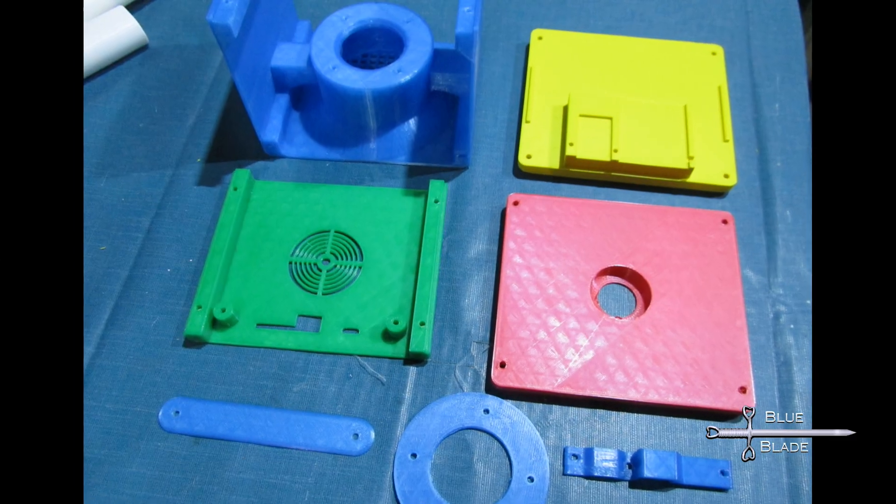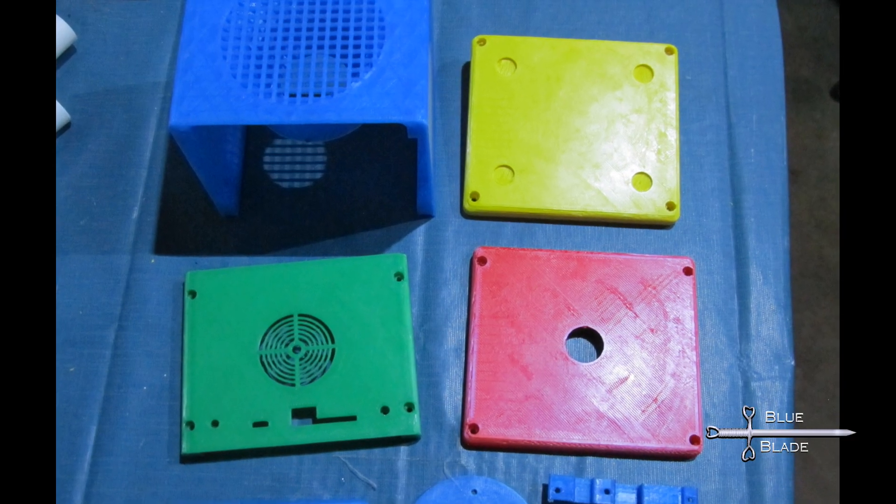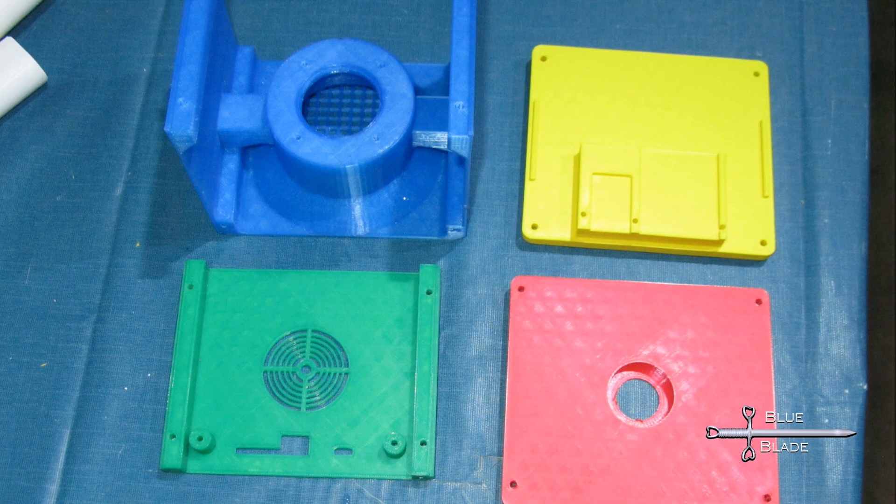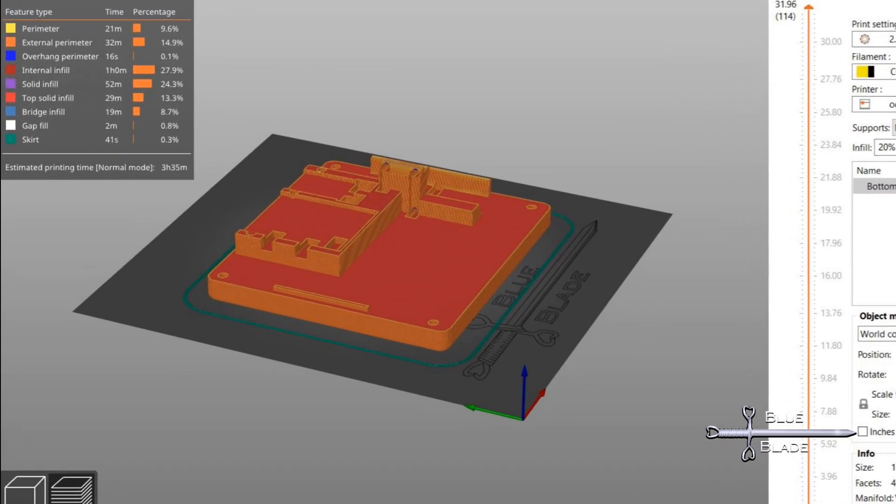For printing, I used PLA. Three walls, three top, and three bottom layers. 30% infill and quarter millimeter layer height. Make sure to orient it with the flat side on the table for each piece. Everything should print without supports.